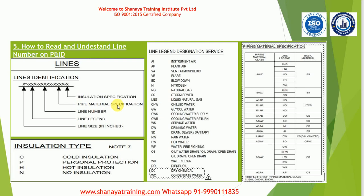The next information is piping material specification, called PMS. This is very crucial for us. The piping team provides a piping material specification sheet. In the next video I will explain how to read the PMS, but at this point you need to understand what piping material specification applies to a given line — what is the material of the piping for that line.